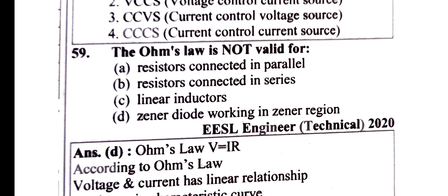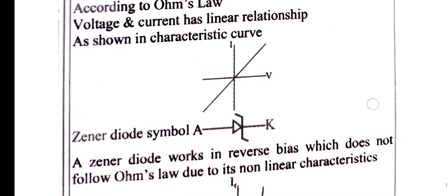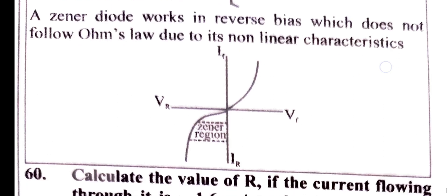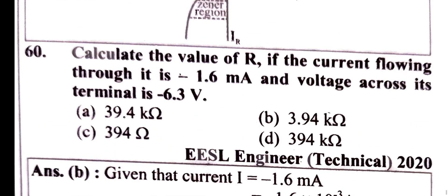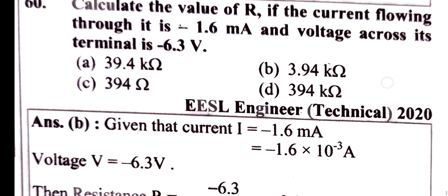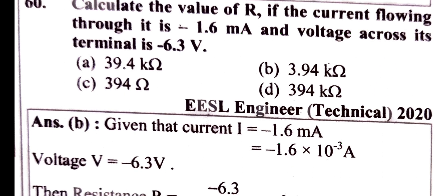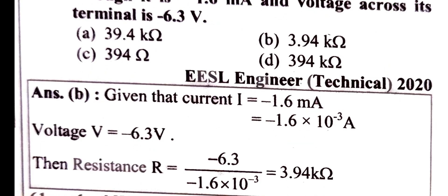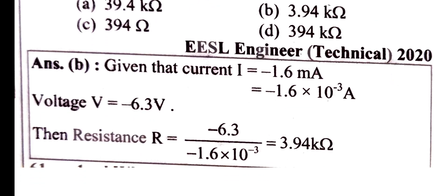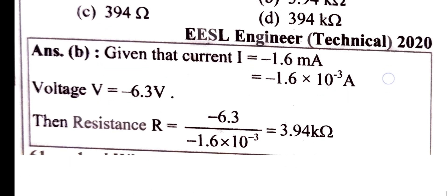It is not working in reverse bias condition, not following ohm's law, and is non-linear. For the last question, calculate the value of R if the current flowing through it is −1.6 mA and the voltage across the terminal is −6.3 V. R equals −6.3 divided by −1.6 mA, giving the answer in kΩ.